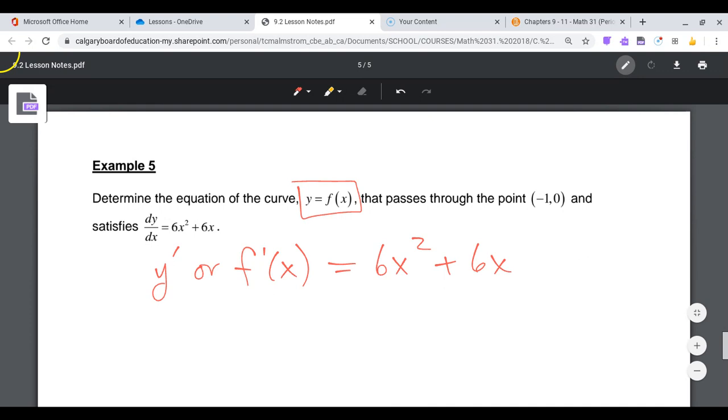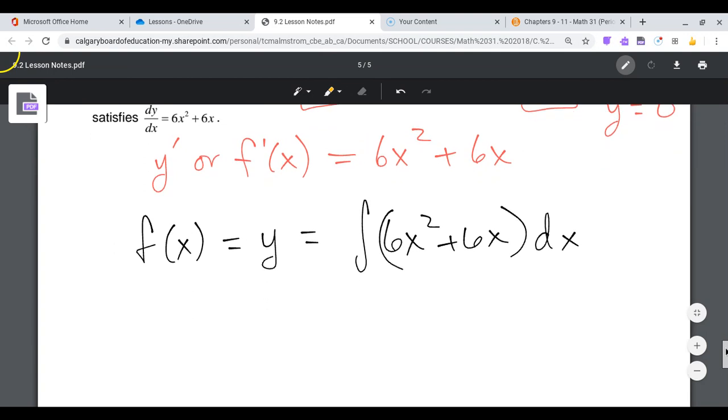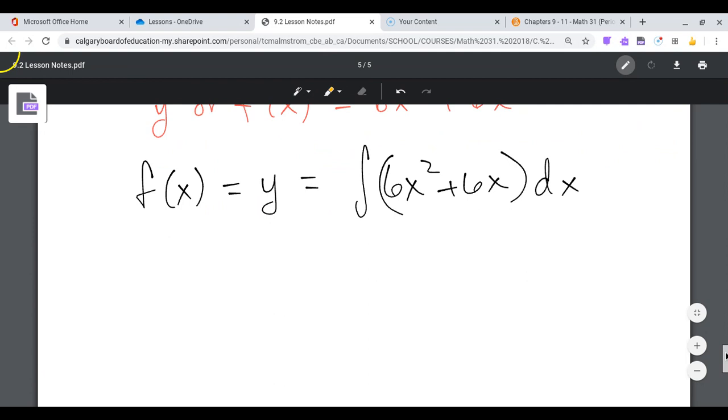And then the negative 1, 0, that gives me my initial conditions to work with. I would know that x is equal to negative 1, and y is equal to 0. So I could write this with my integration symbol. I could say that f of x, or y, doesn't matter, would be equal to the integral of 6x squared plus 6x in terms of x. So using our notation from the 9.1 lesson to say what it is that I'm going to do.